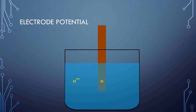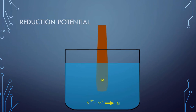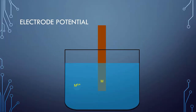The first possibility is that the metal ions, on collision with the metal rod, may gain electrons and change into metal atoms — that is, the metal ions are reduced. This happens only if the metal ions have a relatively higher tendency to gain electrons. In other words, the electrode has a higher potential to get reduced, or simply it has a reduction potential. When this happens, the metal ions gain electrons from the metal rod, and as a result the metal rod develops a positive charge with respect to the solution, and ultimately an equilibrium is reached.